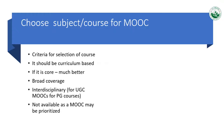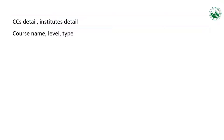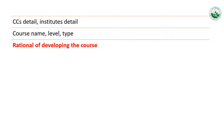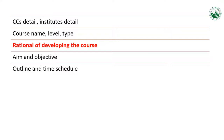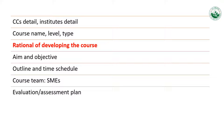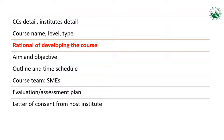The details you need to include in your proposal are: CEC detail, institute detail, course name, level, rationale for developing the course, aim and objective, outline and time schedule, who will be the subject matter experts, an evaluation and assessment plan, letter of consent from the host university, and an introductory video.